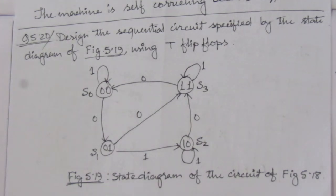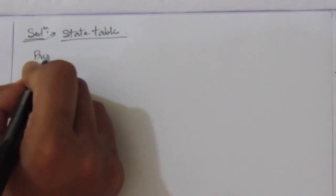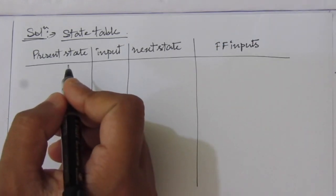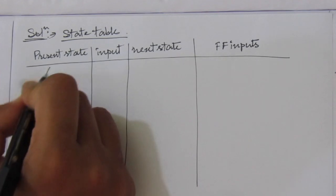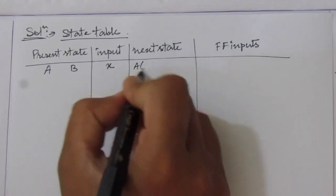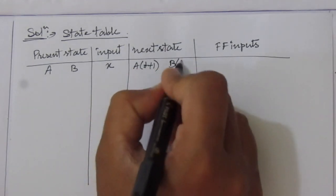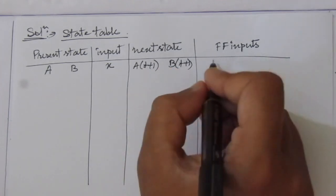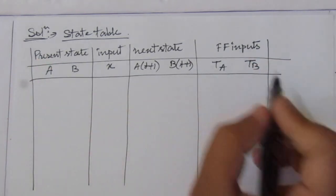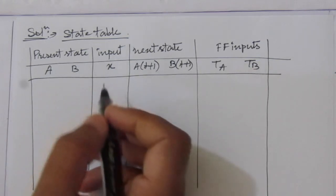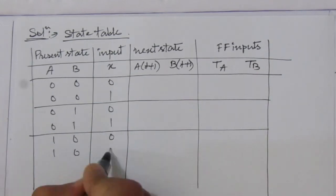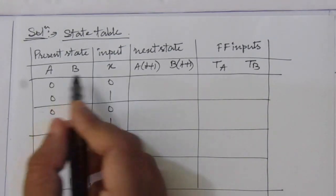Let us start with the state table. We have to write present state, input, and next state. Then we have to find out the flip-flop inputs. Suppose the two flip-flops are A and B. We'll write present state as A and B, input is denoted by X, and next state is A(T+1) and B(T+1). The flip-flop inputs will be TA and TB, because in T flip-flops we have only one input. So for this present state and input, we'll have 8 combinations.